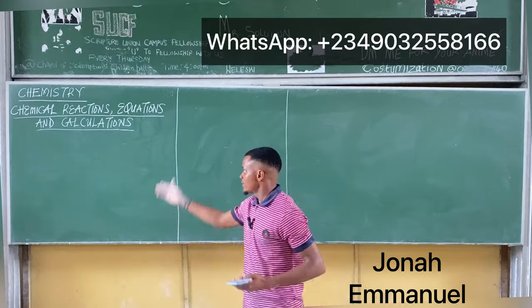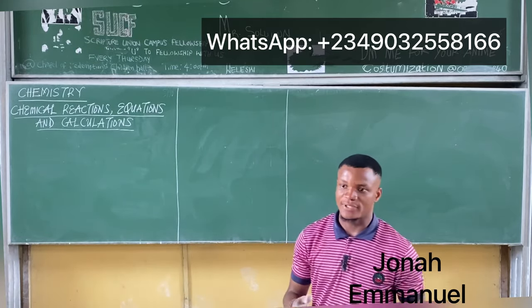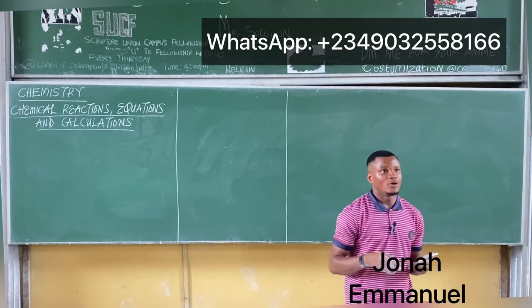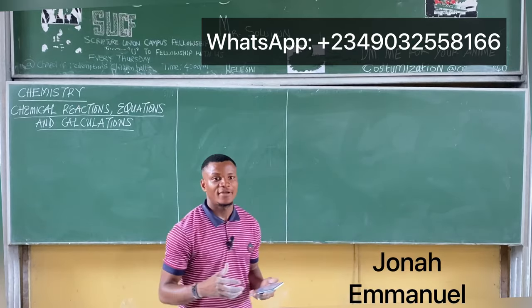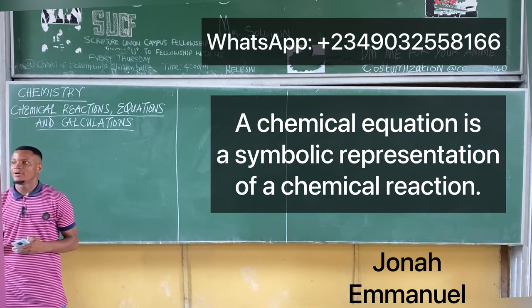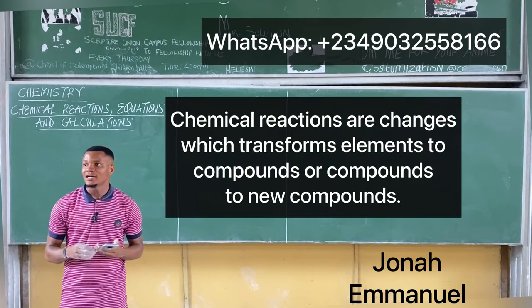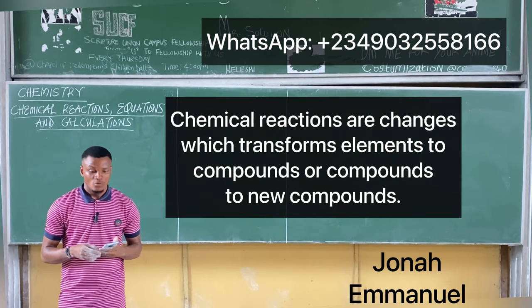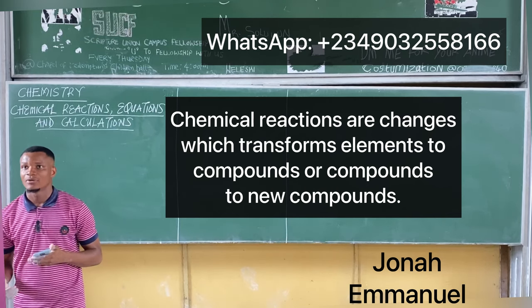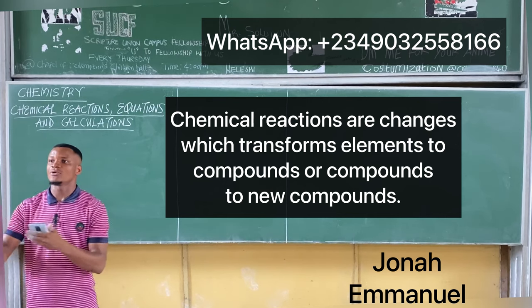Let's look at chemical reactions, equations and calculations. A chemical equation is a symbolic representation of a chemical reaction. Chemical reactions are changes which transform elements to compounds or compounds to new compounds.